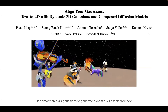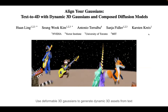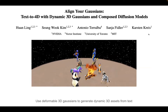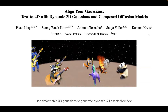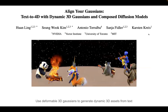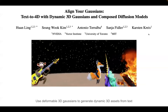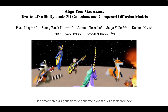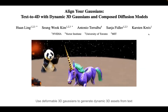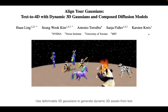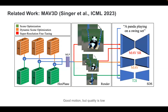Now I'll present the second paper: Align Your Gaussians — Text-to-4D with Dynamic 3D Gaussians and Composed Diffusion Models. What this work does is generate dynamic 3D assets from text using deformable 3D Gaussians. You can see different objects generated just from text prompts.